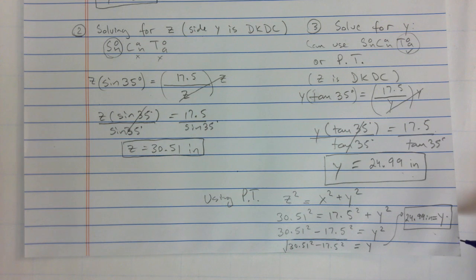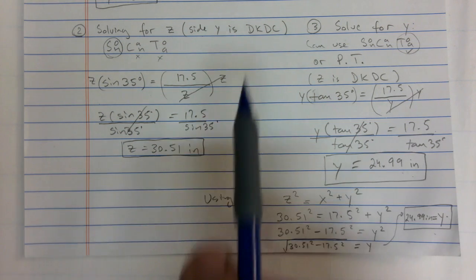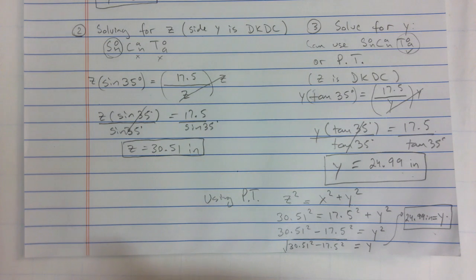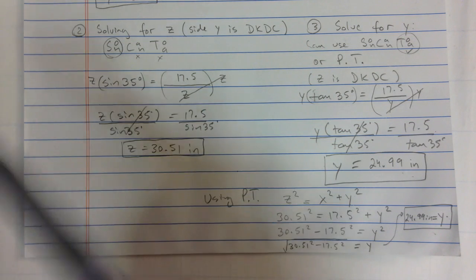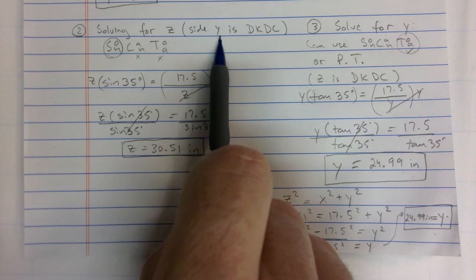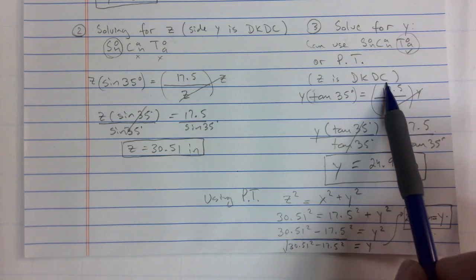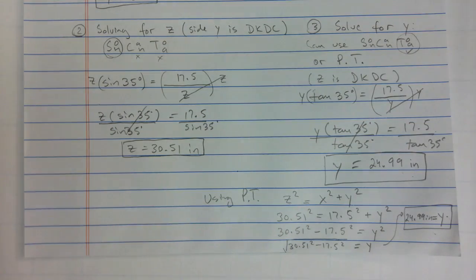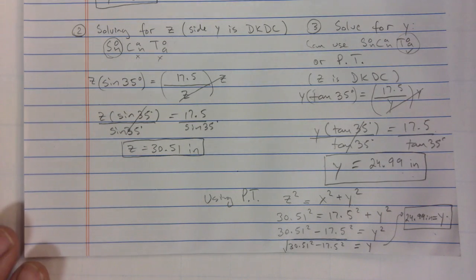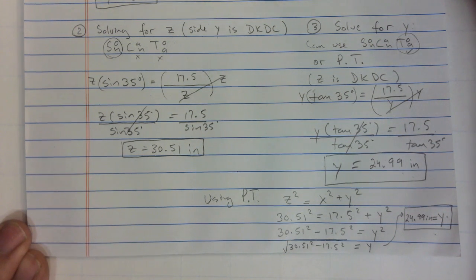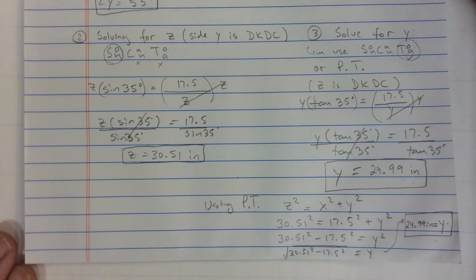Just remember, you need to decide which one is your 'don't know, don't care.' If you're trying to solve for Z first, then Y is the don't know, don't care. If you're trying to solve for Y first, then Z is the don't know, don't care. You need to see which two sides are involved to pick the right trig ratio. This is solving a triangle — and this is just one triangle.